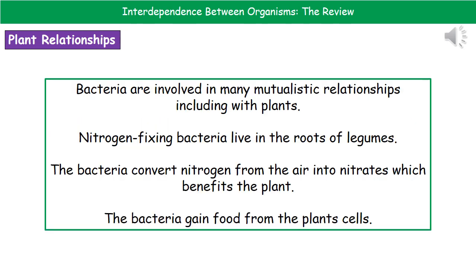It's not just animals that show these relationships — plants too. With plants, we tend to see a lot of mutualistic relationships with bacteria. The nitrogen-fixing bacteria mentioned in the nitrogen cycle live in the roots of leguminous plants such as clover and peas. Those bacteria convert nitrogen from the air into nitrates, which benefits the plant because they can take up those nitrates into their root systems. In return, the bacteria gain food from the plant cells. So both benefit — making it a mutualistic relationship.